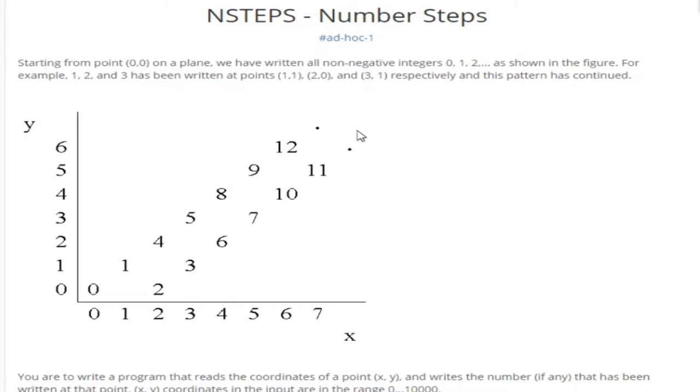So we have 0,0 then 1,1 then 2,2 which is 4. Then 3,3 which is 5. 4,4 is 8. 5,5 is 9. 6,6 is 12, yeah.